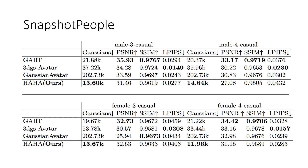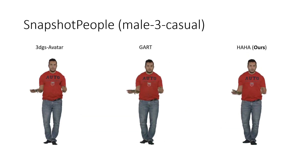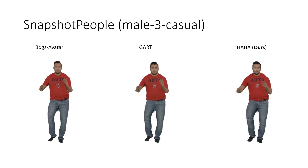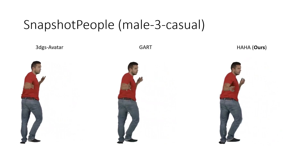In our experiments, we compared HAHA to state-of-the-art Gaussian methods, namely GART, 3DGS-Avatar, and Gaussian-Avatar. We demonstrate metrics on par with state-of-the-art approaches for the Snapshot People dataset while using almost two times fewer Gaussians. HAHA also demonstrates qualitative improvement compared to the state-of-the-art for novel poses and viewpoints while using fewer Gaussians.